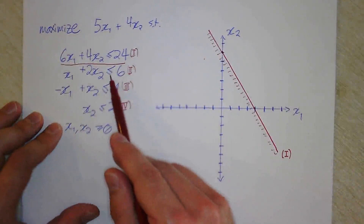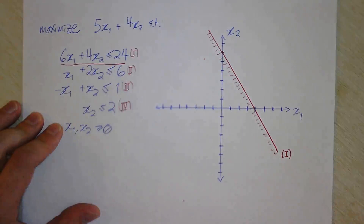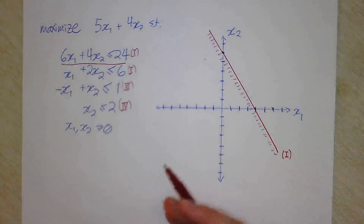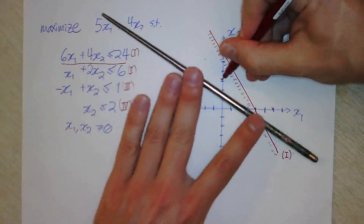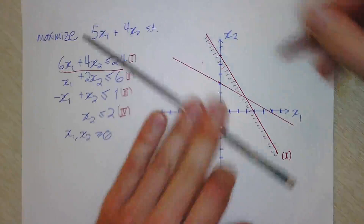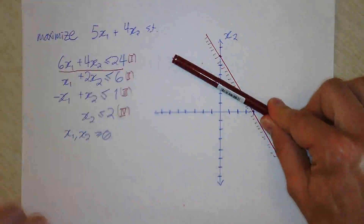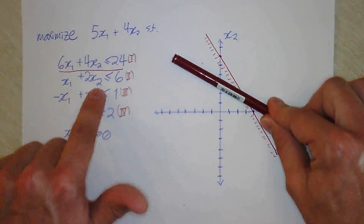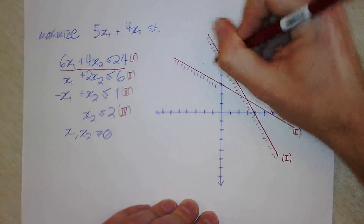We'll do the same thing for constraint II. Again, pretend the inequality is an equal sign and draw the line. The x1-intercept is x1 equals 6, and the x2-intercept is 2x2 equals 6, so x2 equals 3. I draw and label that line Roman numeral II. Checking the origin: 0 is less than or equal to 6, so the origin satisfies this constraint, meaning we must be below this line as well.